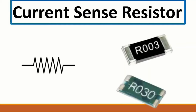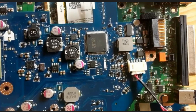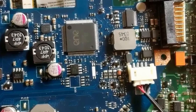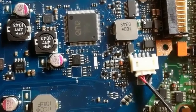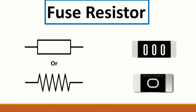Then we have the current sense resistor - it senses whether the current circuit is okay or not. We find this kind of resistor always at the beginning of any circuit, especially in charge circuits - 3V, 5V circuits. Its resistance is about zero to two ohms. On the motherboard, here we have current sense resistors near the power jack and switches.